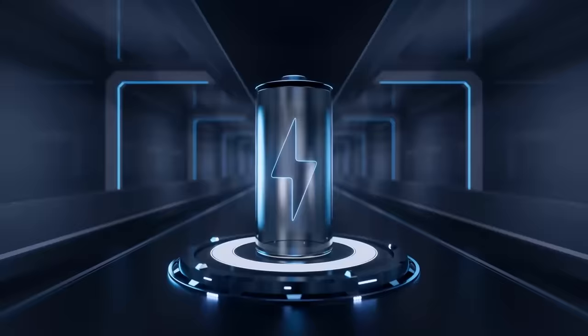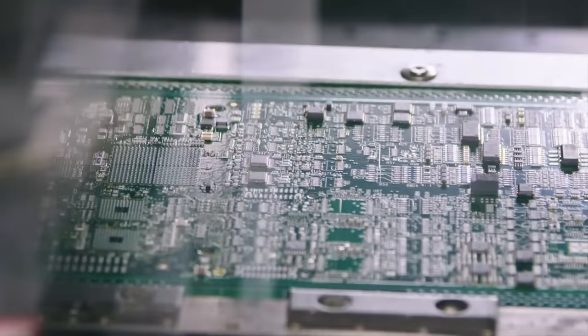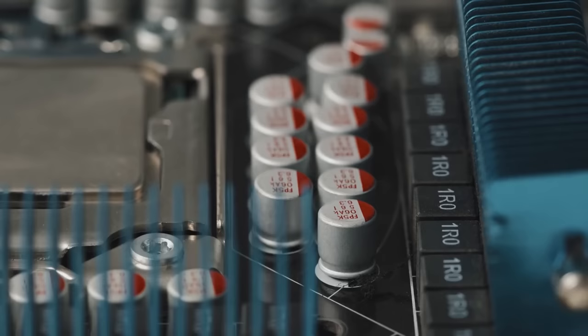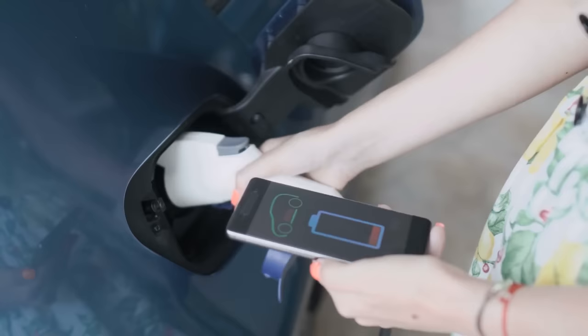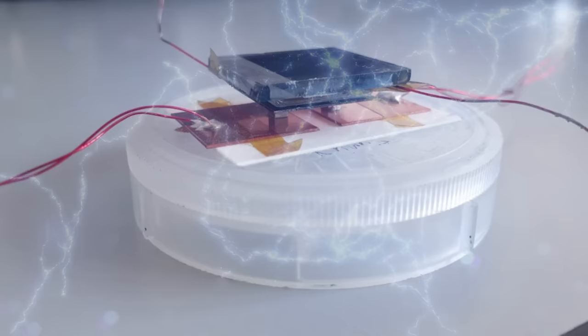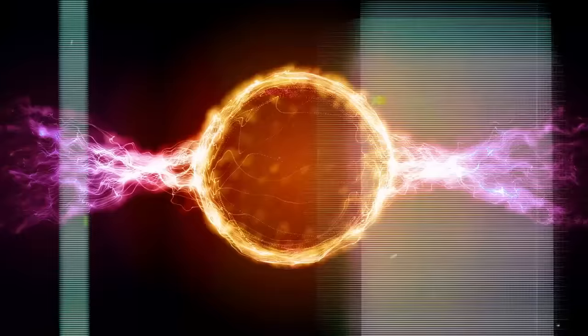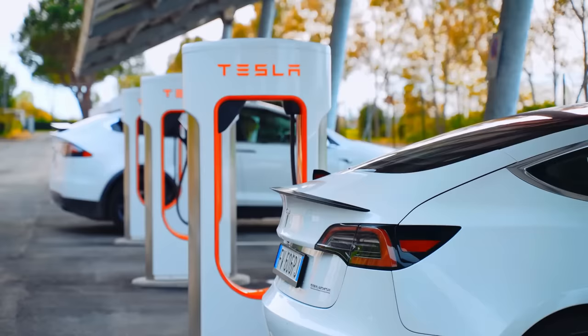They contribute to the development of advanced energy storage systems, such as batteries and supercapacitors. By manipulating and engineering nanomaterials, nanorobots can enhance energy storage capacities, improve charge-discharge rates, and increase the overall lifespan and reliability of energy storage devices. Nanorobots can aid in the conversion of energy from one form to another. For example, they can be employed in thermoelectric devices to optimize the conversion of waste heat into electricity. By manipulating materials at the nanoscale, nanorobots can enhance the thermoelectric properties of materials, boosting energy conversion efficiencies.